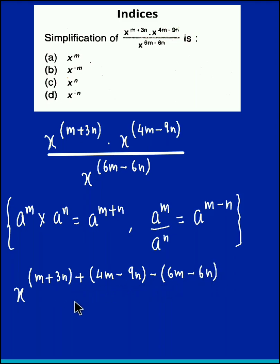Now if we just open this bracket we get x raised to, so we open all the three brackets. So m plus 3n plus 4m minus 9n minus 6m plus 6n. Let us rearrange the terms in the power.